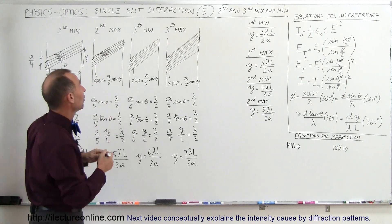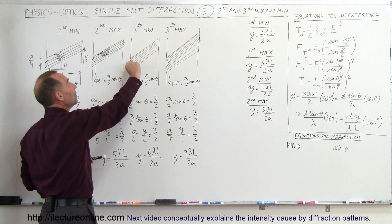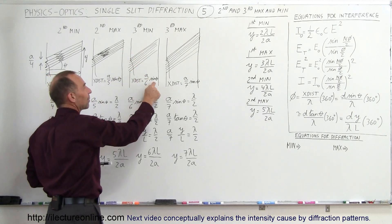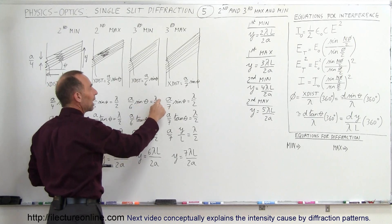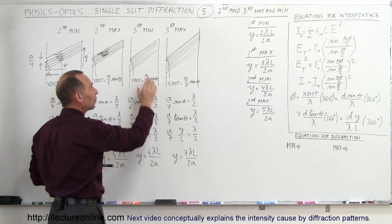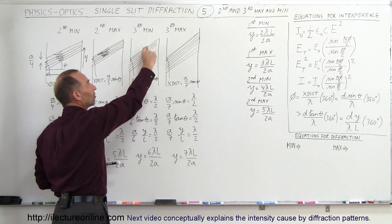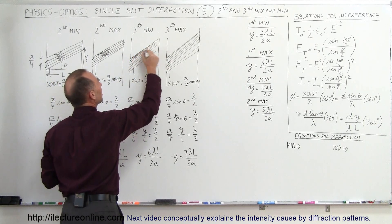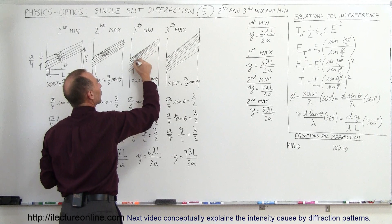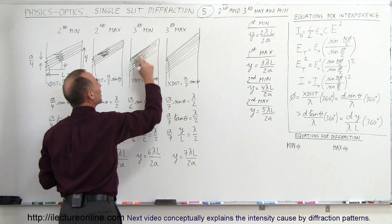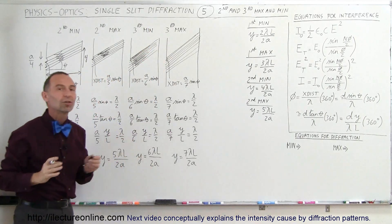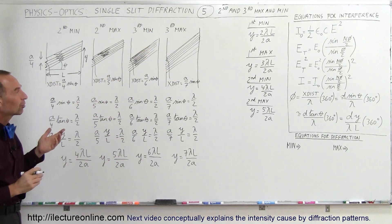The third minimum is found when you go one-sixth into the beam and the extra distance A over 6 times sine theta is set equal to lambda over 2. This gives a minimum because the first one-sixth cancels out the second one-sixth, the third-sixth cancels out the fourth-sixth, and the fifth-sixth cancels out the sixth-sixth of the beam. The whole beam cancels out — complete destructive interference — and there's nothing to be seen on the screen: another dark spot.